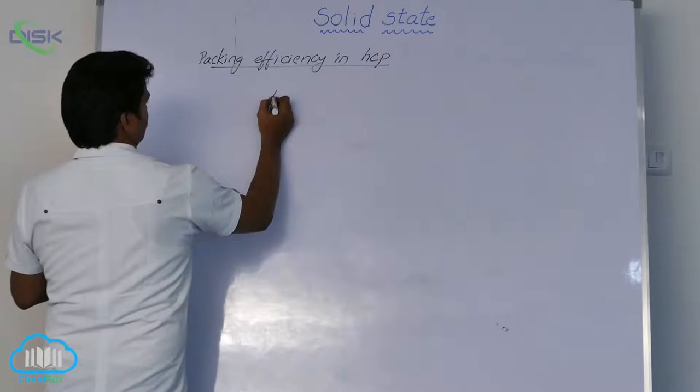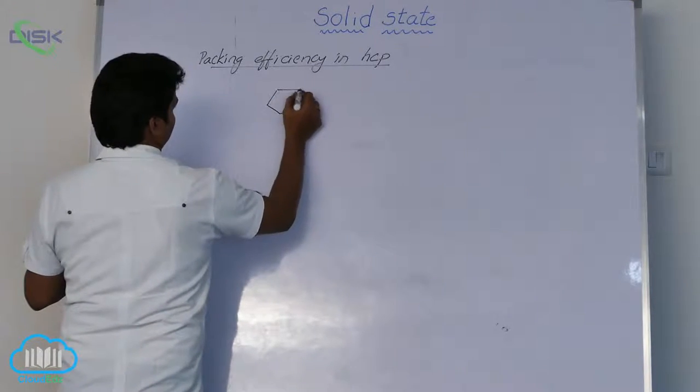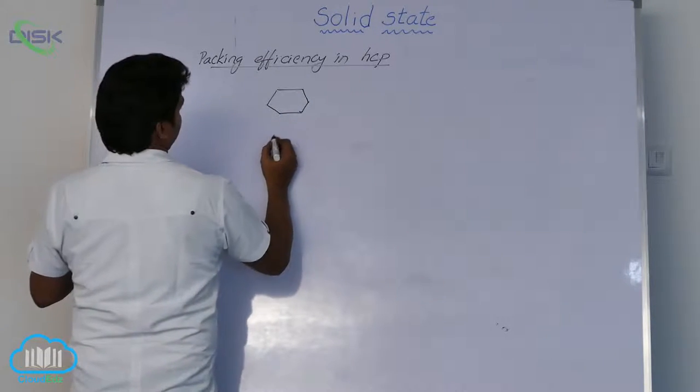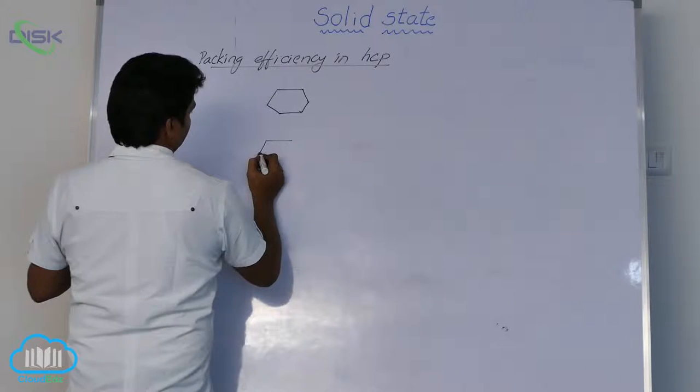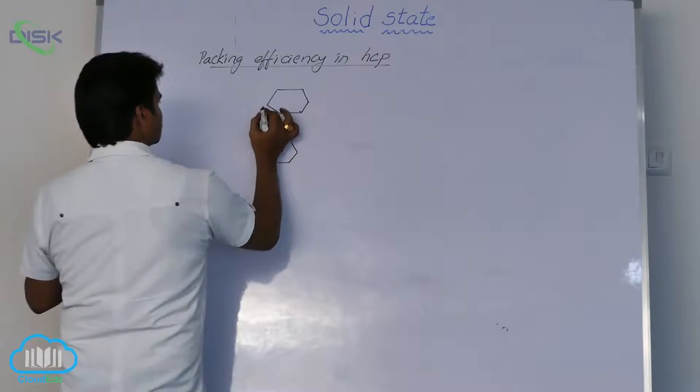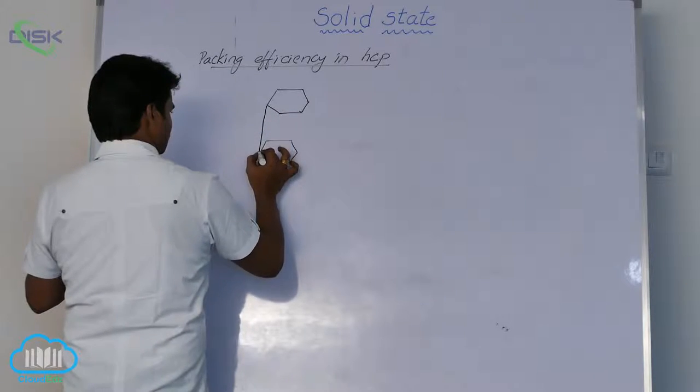In this picture we have two hexagons. How many lattice points are there in hexagonal system? Everywhere I discussed this.